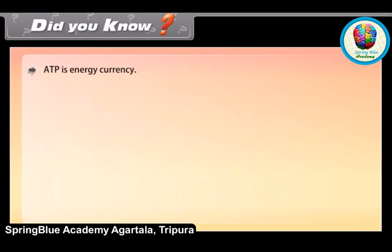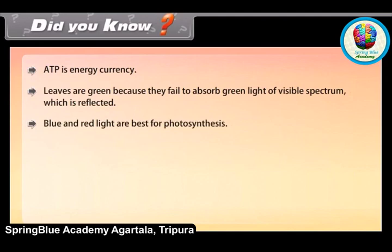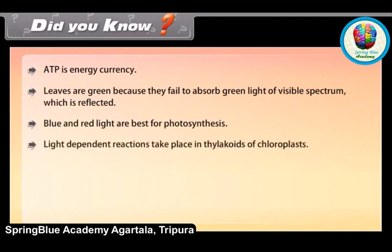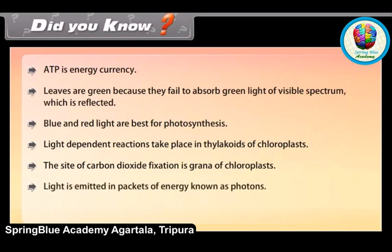Did you know: ATP is the energy currency of the cell. Leaves are green because they fail to absorb green light of the visible spectrum, which is reflected. Blue and red light are best for photosynthesis. Light-dependent reactions take place in the thylakoids of chloroplasts, while the site of carbon dioxide fixation is the grana of chloroplasts. Light is emitted in packets of energy known as photons. The splitting of water is known as photolysis.